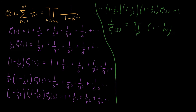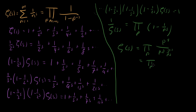So how do we just get zeta of s? We take the reciprocal of every single term, and we see that zeta of s equals the same product over primes, but now it's 1 over (1 minus 1 over p to the s). To get it into the exact form we want, we multiply top and bottom by p to the minus s, which gives us 1 on top and (1 minus p to the minus s) on the bottom. And so we've done it — we've proven the Euler product formula for the Riemann zeta function.